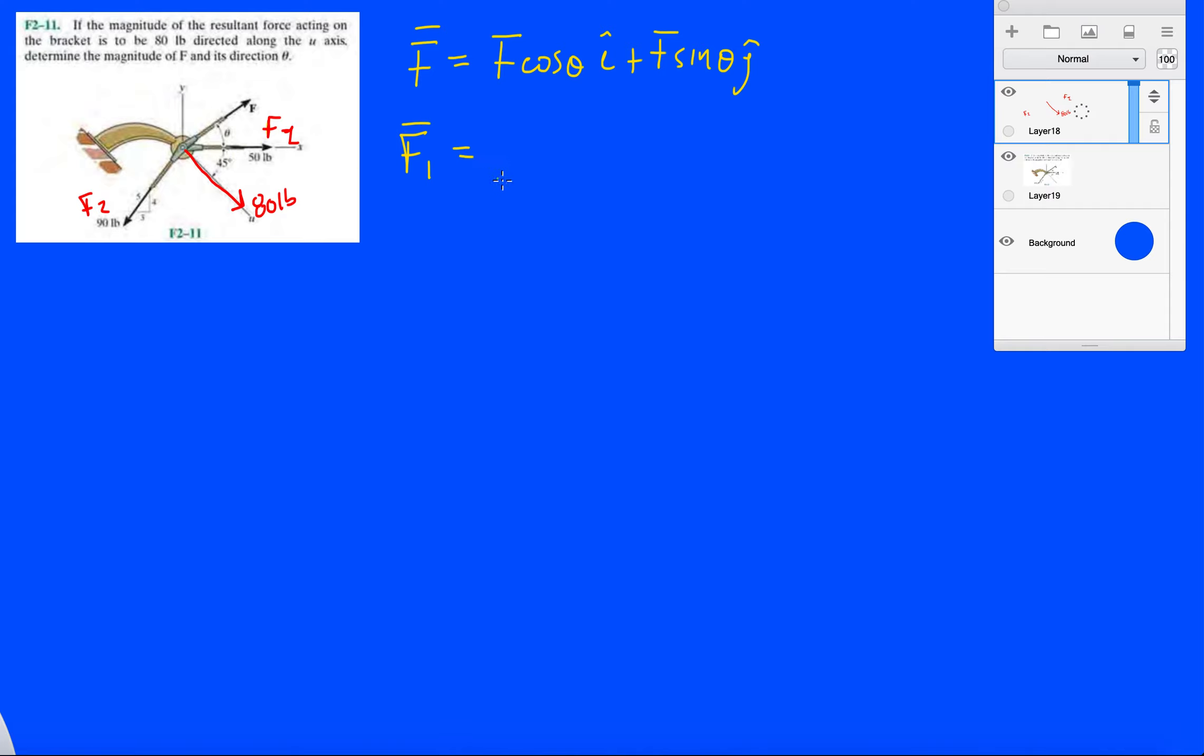F1 is only pointing in the x direction, so it only has one of these components, so it's going to be 50i plus 0j. You don't have to write 0j, but it's just to visualize it.